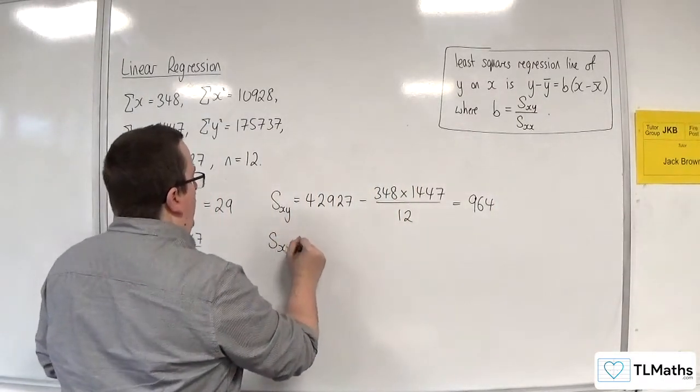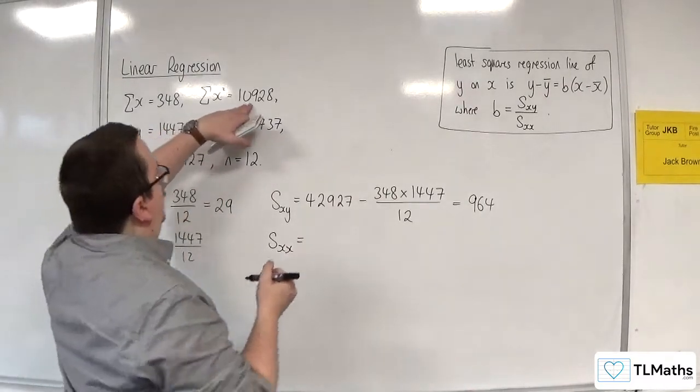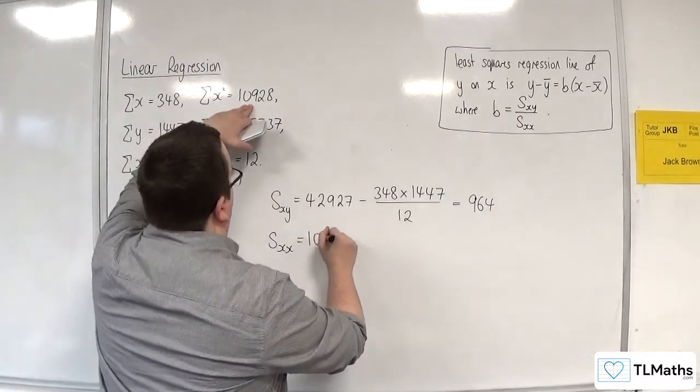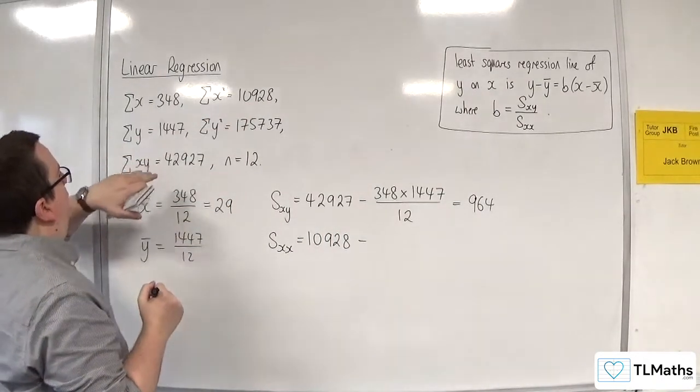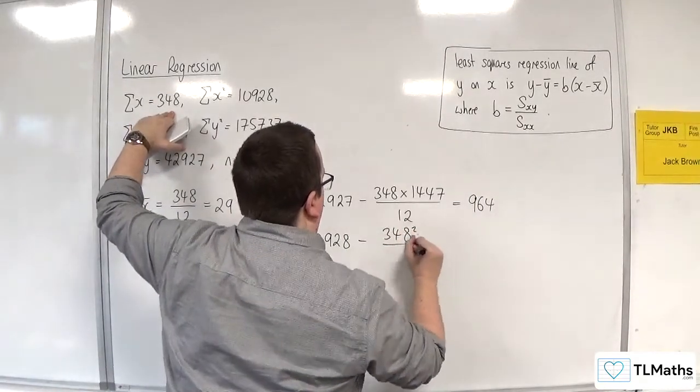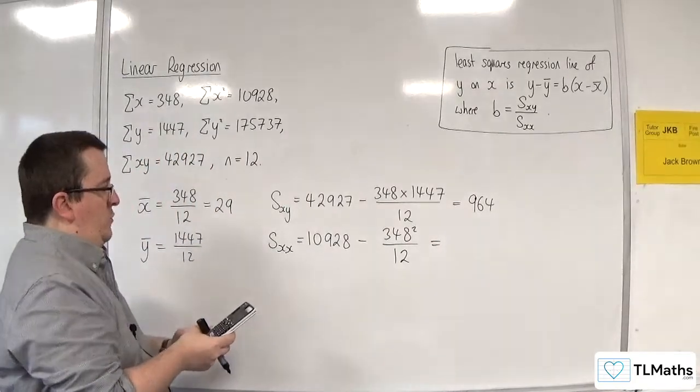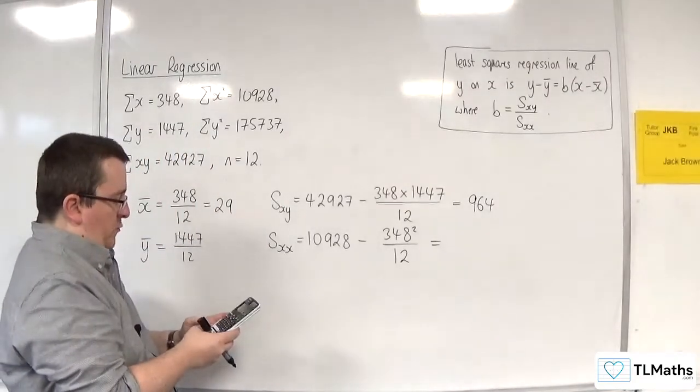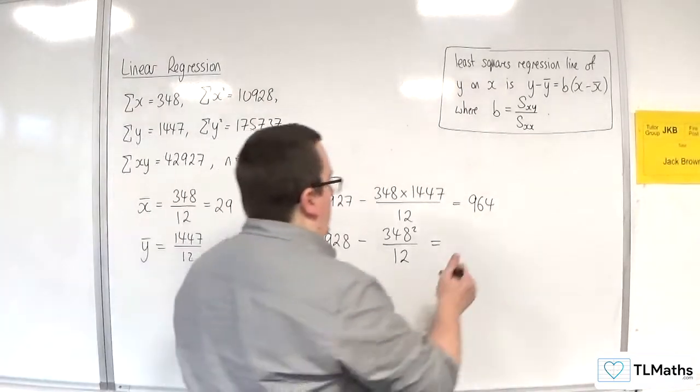Then we have sxx, which is going to be the sum of x squared. So 10928, take away the sum of x, all squared, divided by n. So 10928, take away 348 squared, divided by 12. And that's 836.